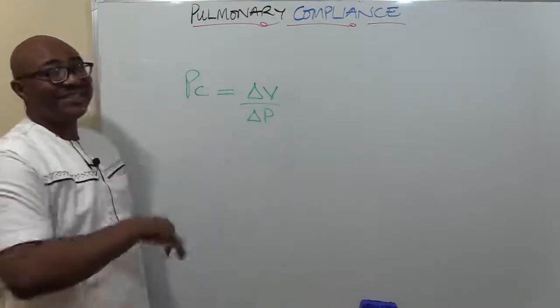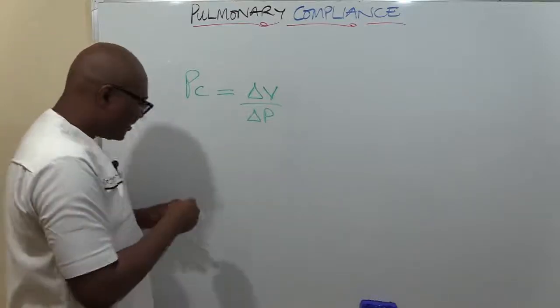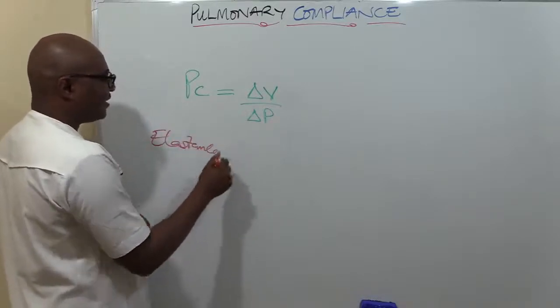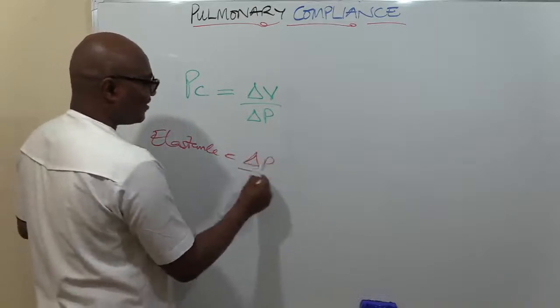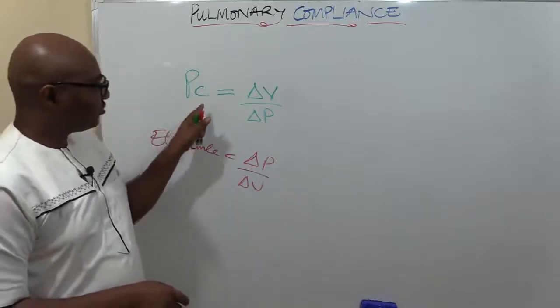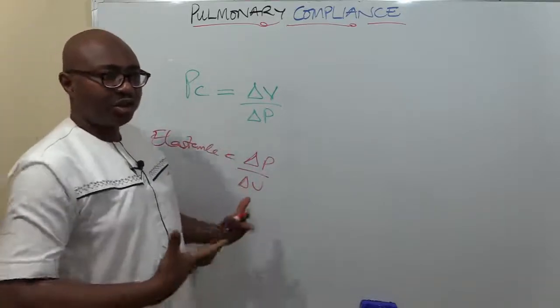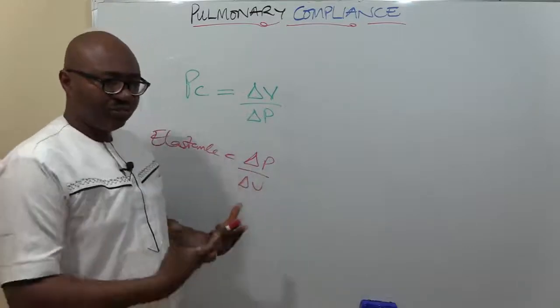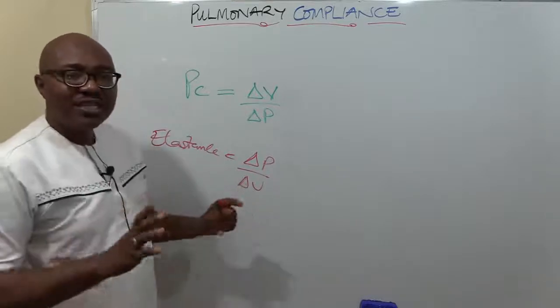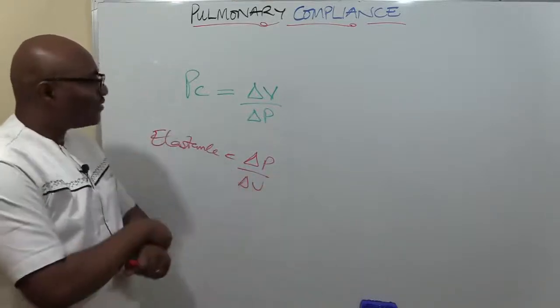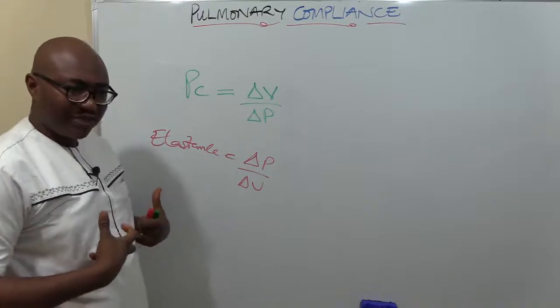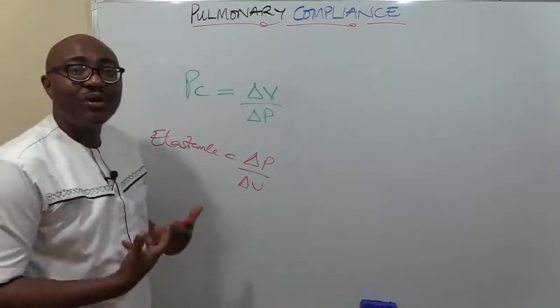There's another term that is different from compliance - it's the opposite actually - called elastance. Elastance is change in pressure over change in volume. But this is what we are focusing on: compliance, how much the volume can change, how much it can stretch when pressure or force is applied. That's what happens in the lungs when the respiratory muscles contract to expand it - how easily does the lung expand?